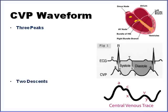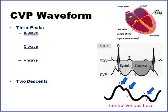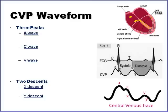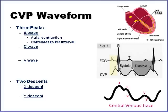Let's talk about the components of the CVP waveform. There are three peaks: the A, the C, and the V wave. And then there are two descents, which are the X and Y descents. The one we really want to pay attention to is the A wave. The A wave represents atrial contraction, and you need the EKG above or below it so you can see where the A wave falls in relationship to the QRS complex. The A wave corresponds to the PR interval.